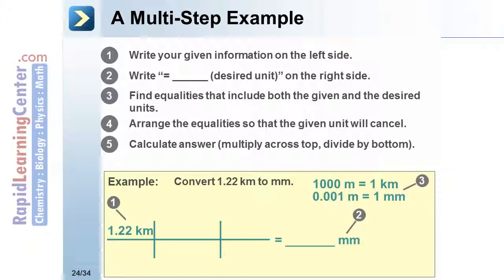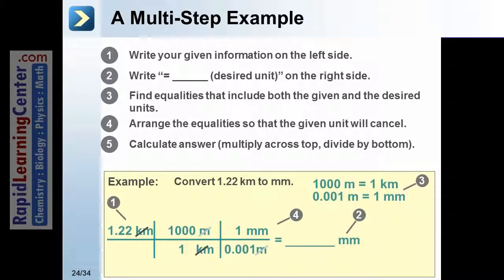To cancel kilometers, that unit must be placed on the bottom. To cancel meters, that unit must be placed on the bottom. Calculate by multiplying 1.22 times 1,000 times 1 divided by 1 divided by 0.001.